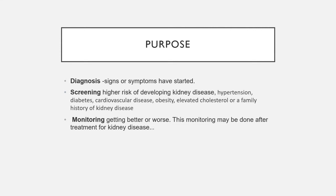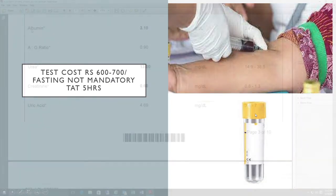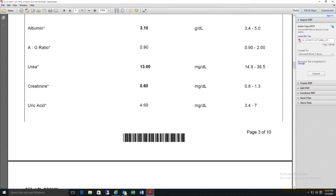The kidney function test helps to see if the kidney is improving or deteriorating. The cost is usually around 600 to 700 rupees. You will need to fast for around 5 to 6 hours before the test. Blood is drawn in a yellow-colored tube. Parameters in the kidney function test report include albumin, urea, creatinine.